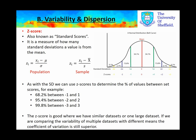The Z-score is good where we have similar data sets or one large data set. If we're comparing the variability of multiple data sets with different means, the coefficient of variation is still superior. I hope this has been helpful, and you can probably now continue with the practical.